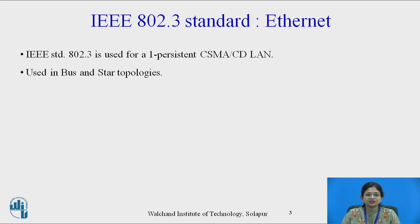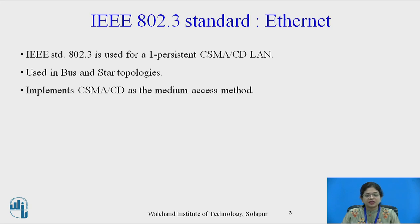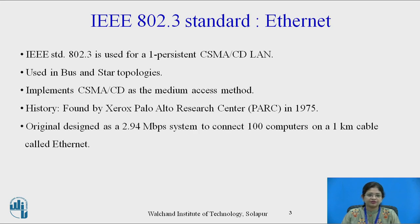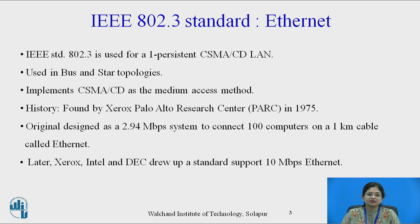IEEE 802.3 uses bus and star topology and implements CSMA/CD as the medium access method. It was founded by Xerox Palo Alto Research Center in 1975, originally designed as a 2.94 Mbps system to connect 100 computers on a 1 km cable — also known as Ethernet. Later, Xerox, Intel, and DEC developed the standard to support 100 Mbps Ethernet.